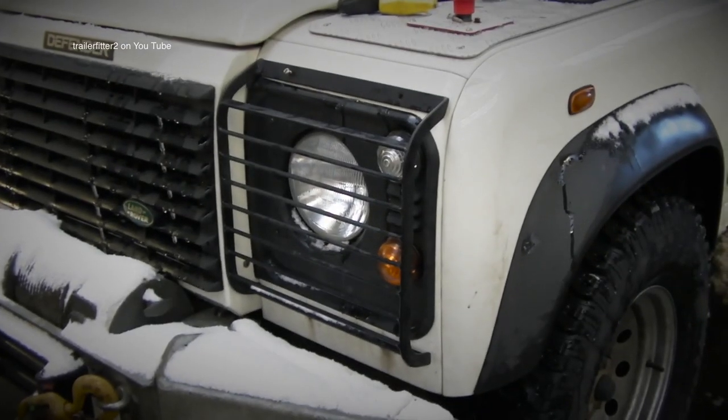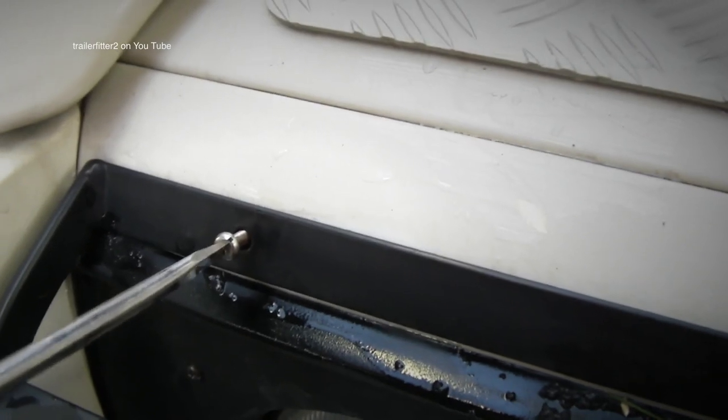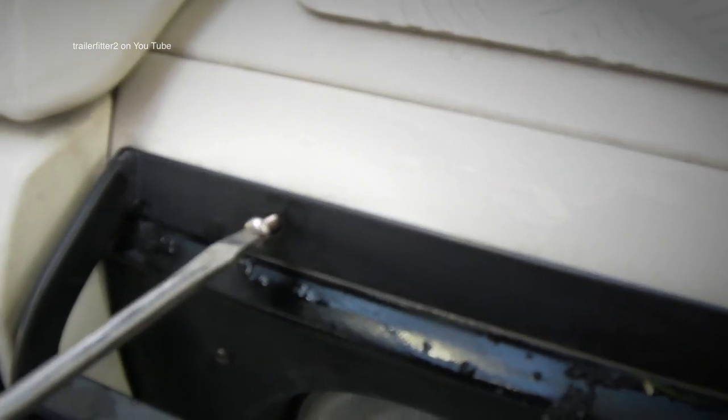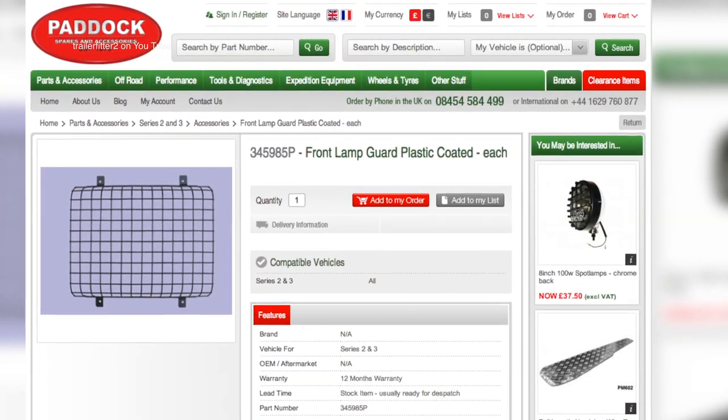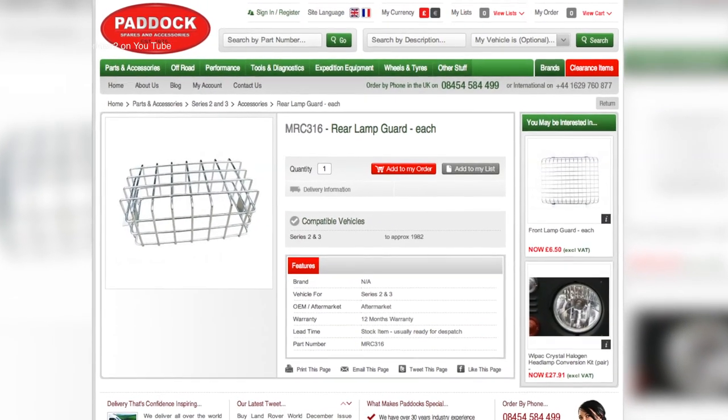There's definitely a time and a place for rivnuts. One of those being the Defender Front Light Guard. If you're interested, Baddix do a range of accessories for Land Rovers. You can access their website from the link below.